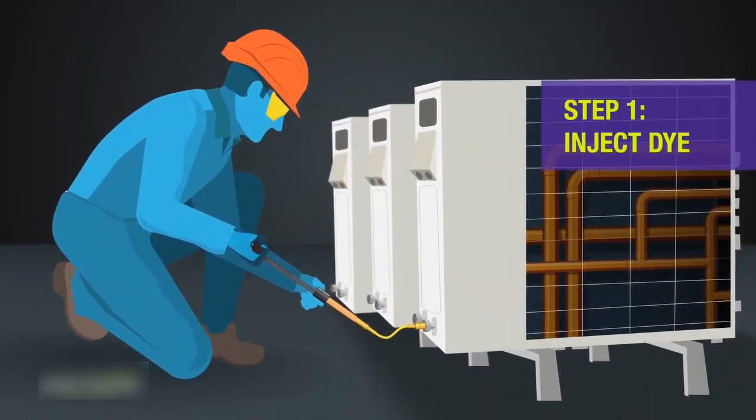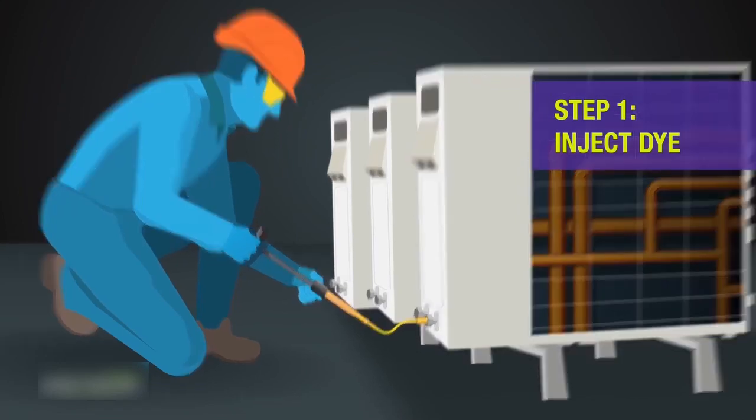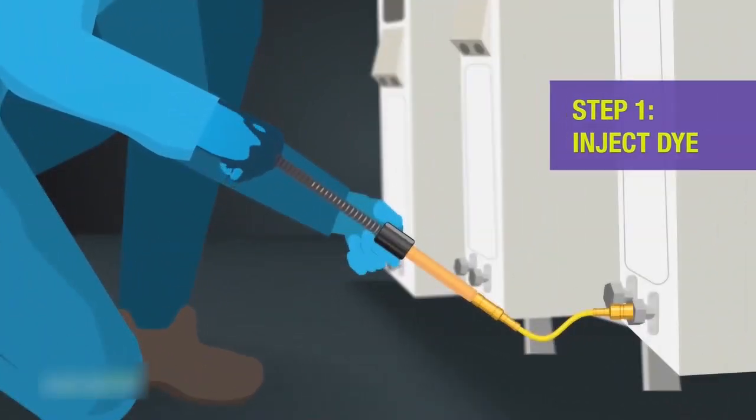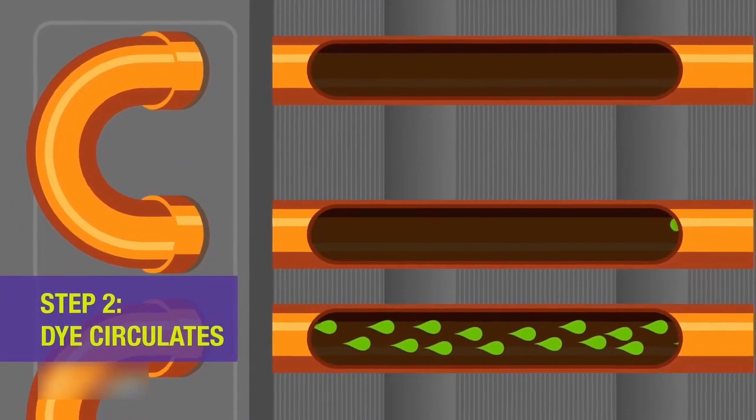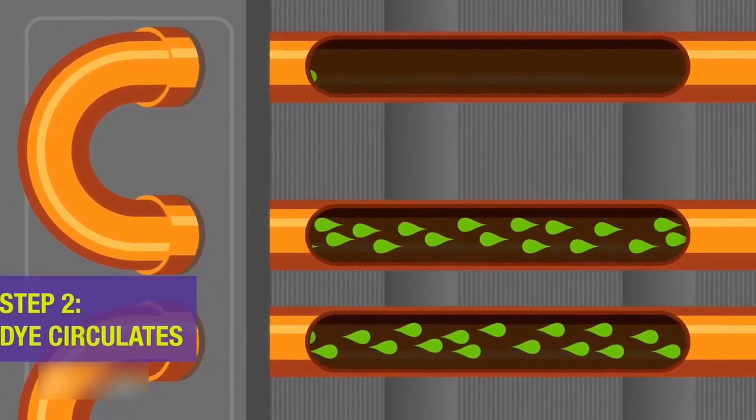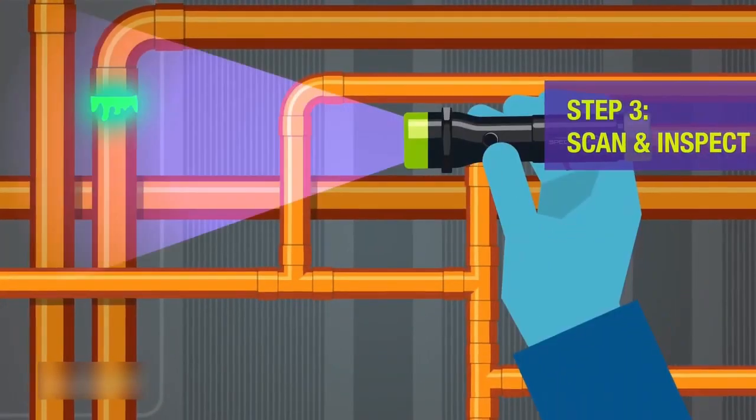The process is simple. The technician injects the fluorescent dye at the low side of the unit while the system is running. The dye starts to circulate throughout the unit. The technician then scans the system with a violet or UV lamp.